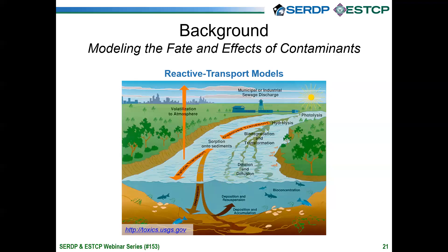I picked a figure from the U.S. Geological Survey that illustrates the pathways that contribute to the fate and effects of any particular environmental contaminant, in this case a surface water system. The way that these reactive transport models are formulated, you have reservoirs of contaminants — say the sediment, soil, fish, or atmosphere — and those reservoirs are connected with fluxes represented by arrows that describe either transport or various kinds of transformations. In the scope of this work, we're talking only about transport in the sense of partitioning between different phases.